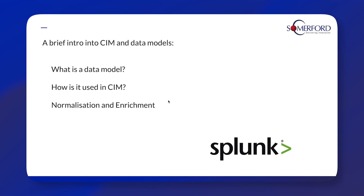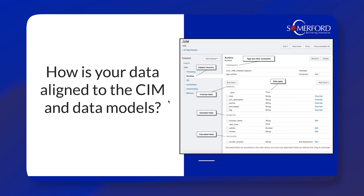So how is your data actually aligned with the data models within the CIM? When data is brought in using an add-on, it will have its own names for fields, which are found in lots of data, such as the source field, SRC, which may be called something else.